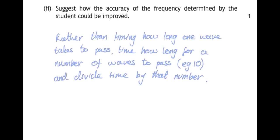So the easiest thing to do would be to measure how long it takes for a number of waves to pass a point, for example, 10 waves, and then divide that time by 10 in this case. And that would give you a much more accurate number.